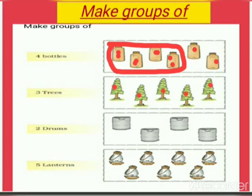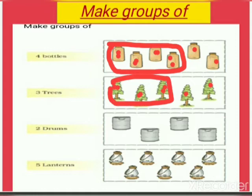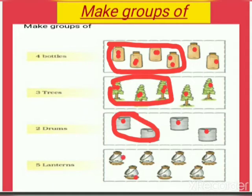In the second group there are one, two, three, four, five trees. Now let us make a group of three trees: one, two, three. In the third group there are one, two, three, four drums. Let us make a group of two drums.